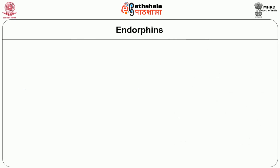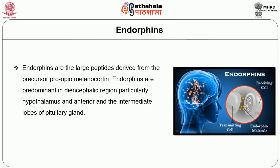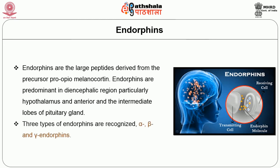Next we move on to endorphins. Endorphins are large peptides derived from the precursor pro-opiomelanocortin. Endorphins are predominant in the diencephalic region, particularly in the hypothalamus and the anterior and intermediate lobes of the pituitary gland. Three types of endorphins are recognized: alpha, beta, and gamma endorphins.